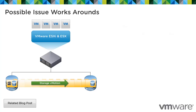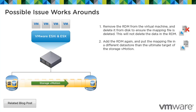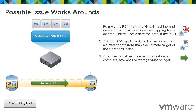A workaround for this issue: remove the RDM from the virtual machine and delete it from disk to ensure the mapping file is deleted — this will not delete the data from the RDM. Re-add the RDM and put the mapping file in a different data store than the ultimate target of the storage vMotion. After the virtual machine reconfiguration is complete, attempt the storage vMotion again.